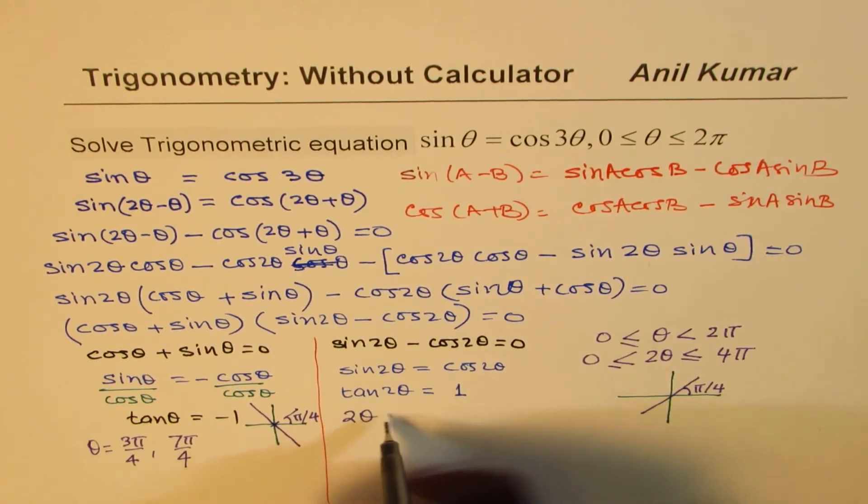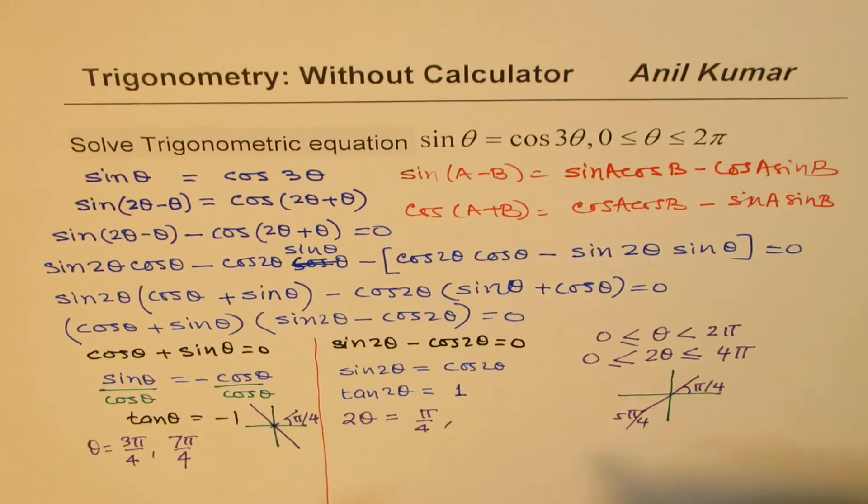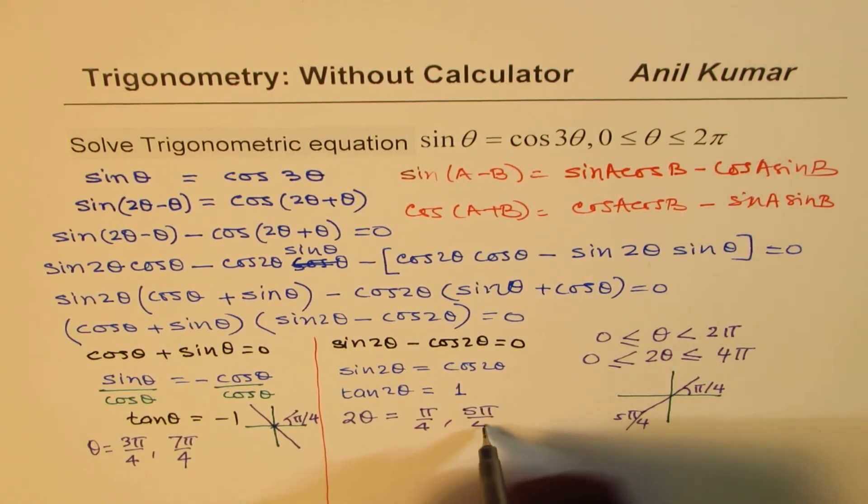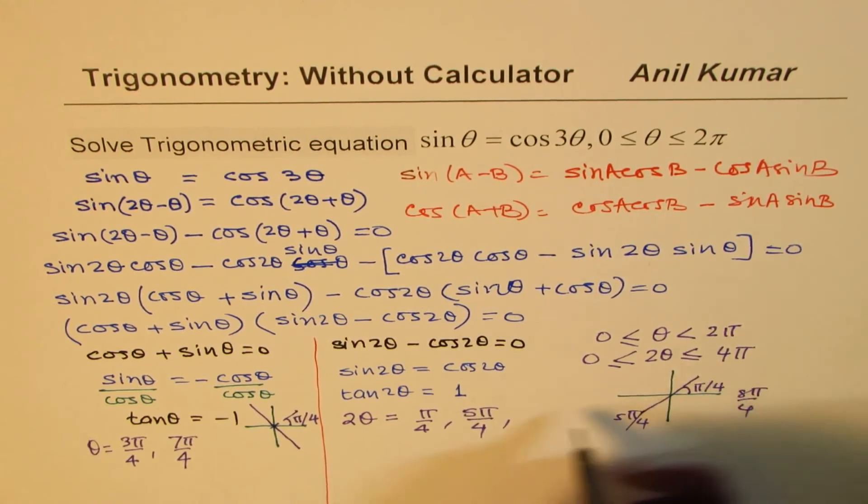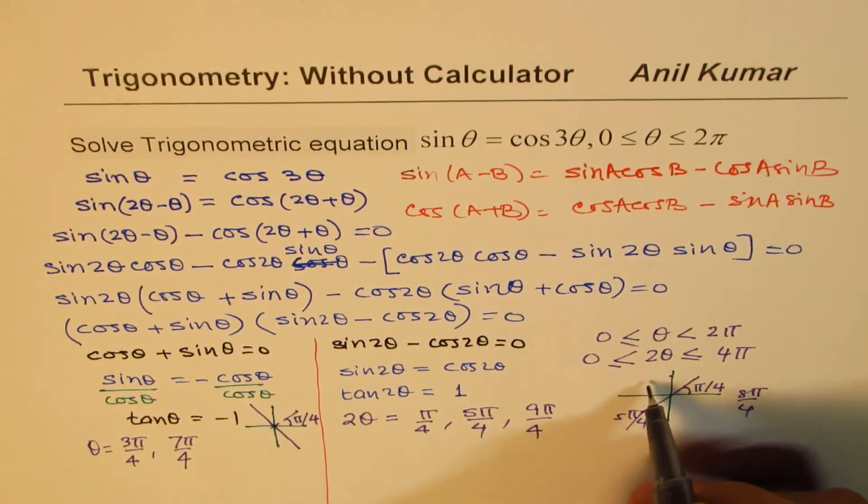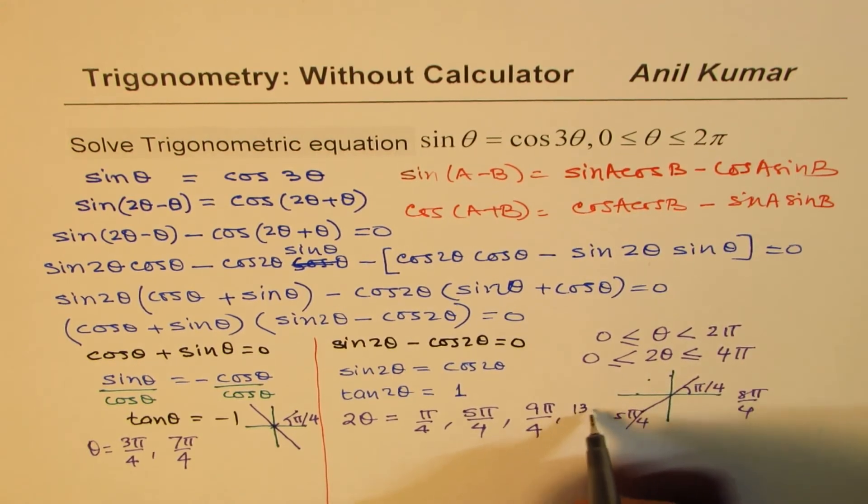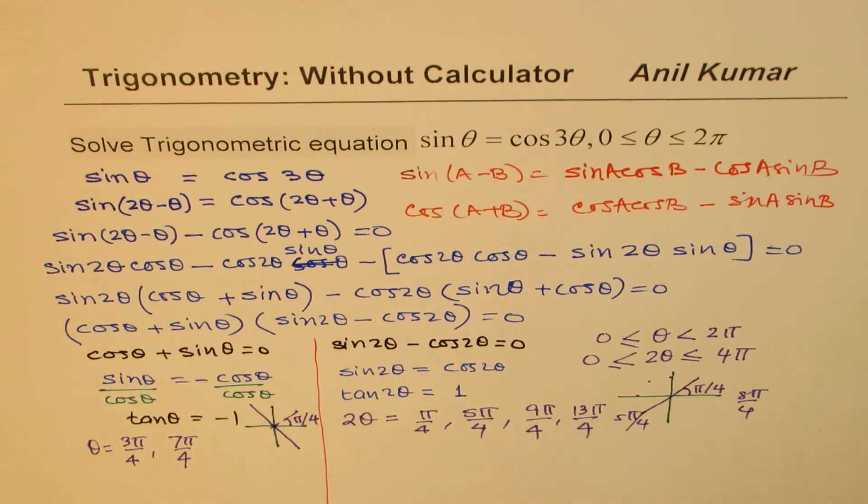So we get 2 theta equals pi by 4. That is 1. Then we go 1 full circle, so this is 5 pi by 4. And then this becomes 9 pi by 4, and 13 pi by 4. So add pi to each to get your answer, because the time period for tangent is pi. So when you add pi to each, they'll go up by 4.